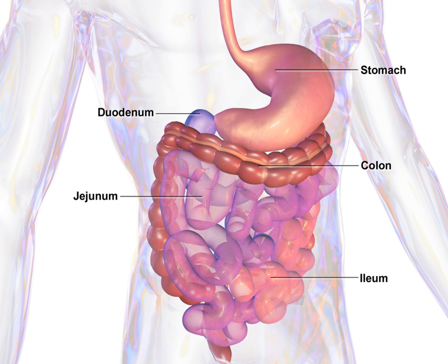The ileum is the final section of the small intestine. It is about 3 meters long, and contains villi similar to the jejunum. It absorbs mainly vitamin B12 and bile acids, as well as any other remaining nutrients.